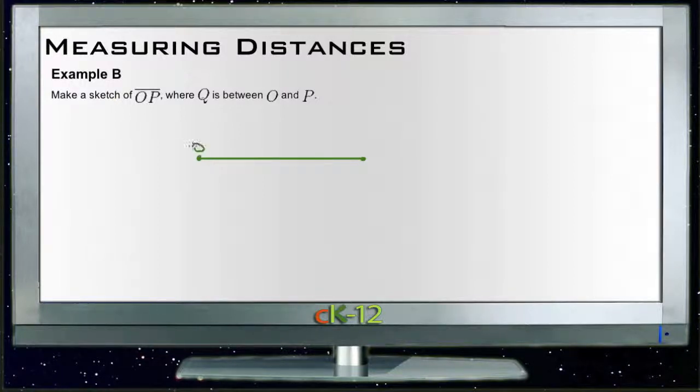And I suppose technically if it's supposed to be line OP, we should probably continue on past those, because if it's supposed to be a line it should go on in both directions. Even though a line segment would probably work, technically this should be a line. And then it says to mark Q between O and P, so we just need to find any place between those two, mark another point, and label it Q. That's all there is for that one.